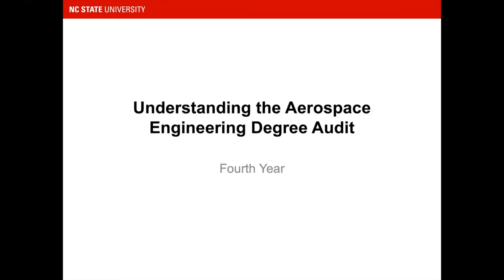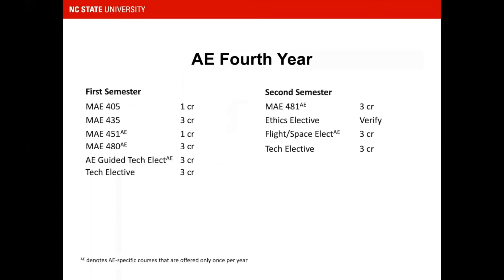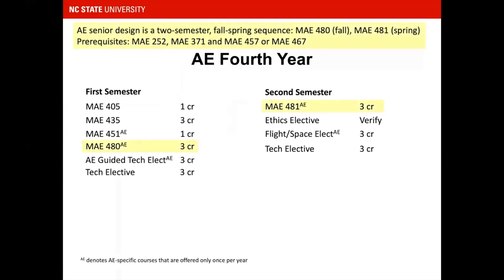Understanding the Aerospace Engineering Degree Audit, Year 4. The fourth year revolves heavily around senior design. AE senior design is a two-semester fall-spring sequence: MAE 480 in the fall and MAE 481 in the spring. Prerequisites for AE senior design are MAE 252, MAE 371, and one flight/space elective, either MAE 457 or MAE 467.